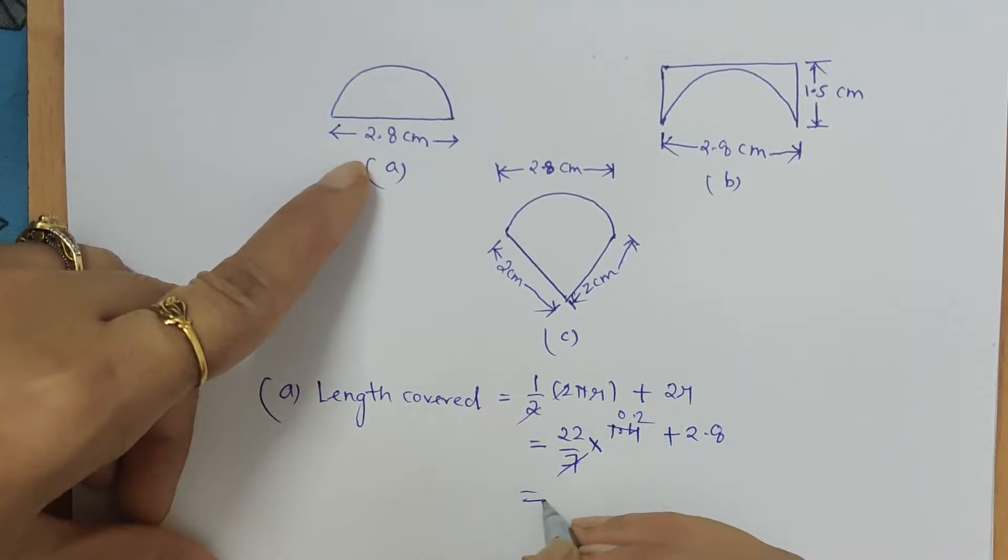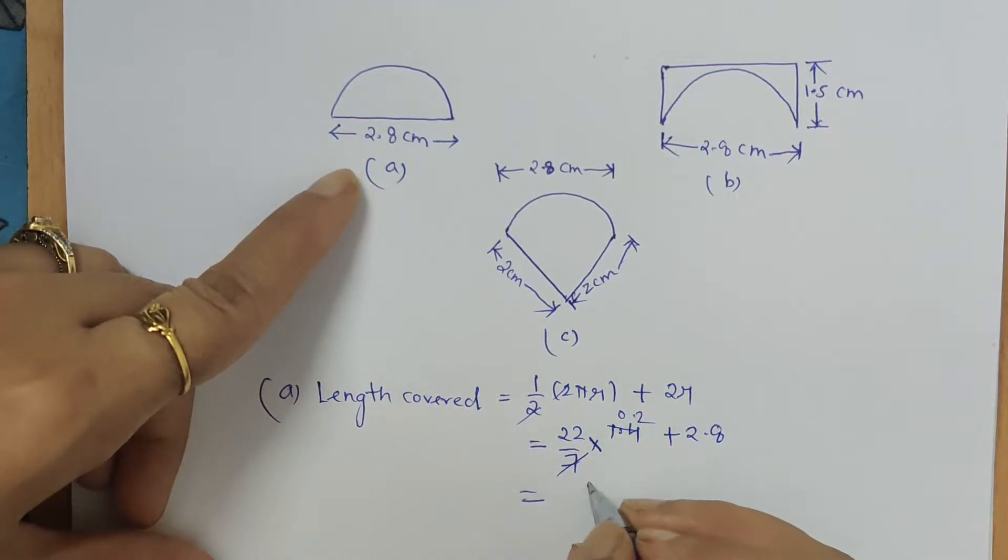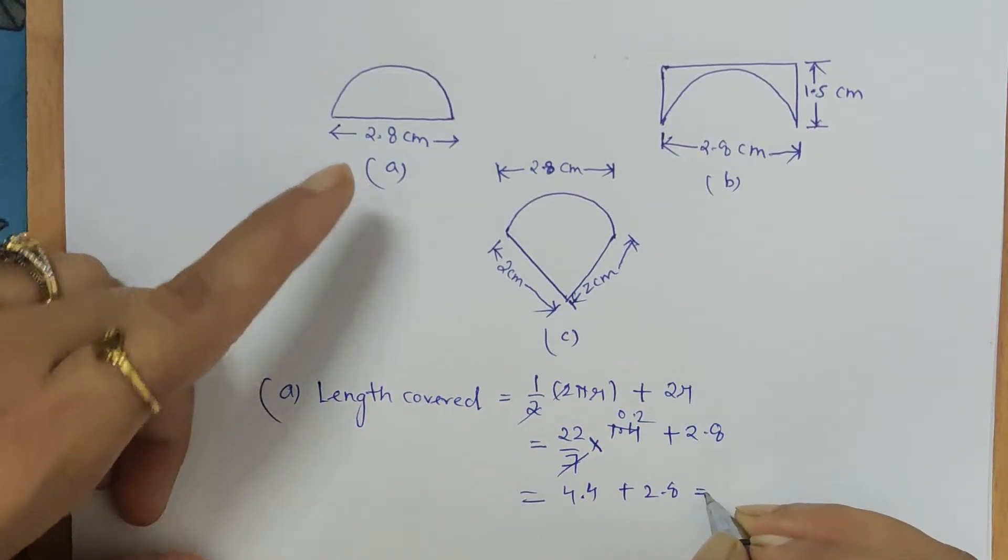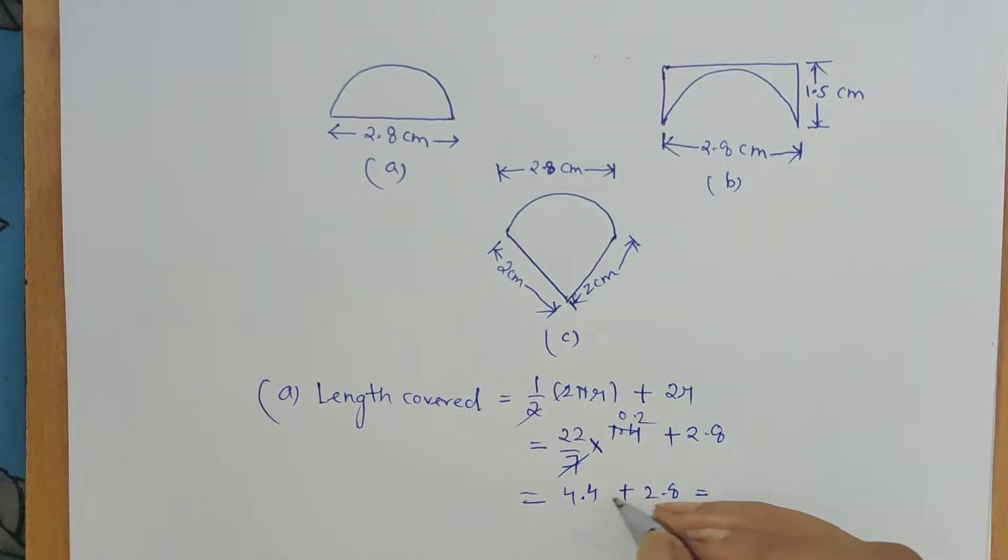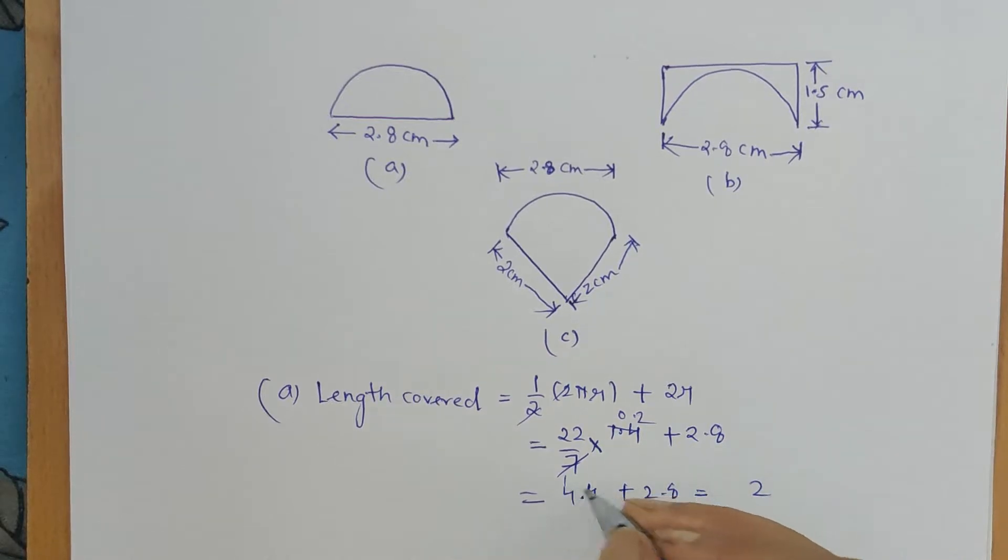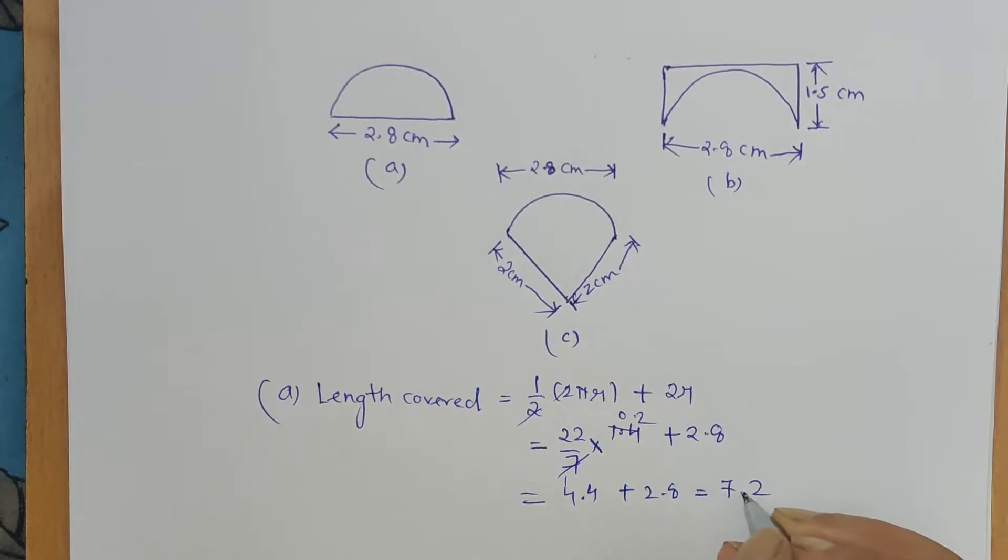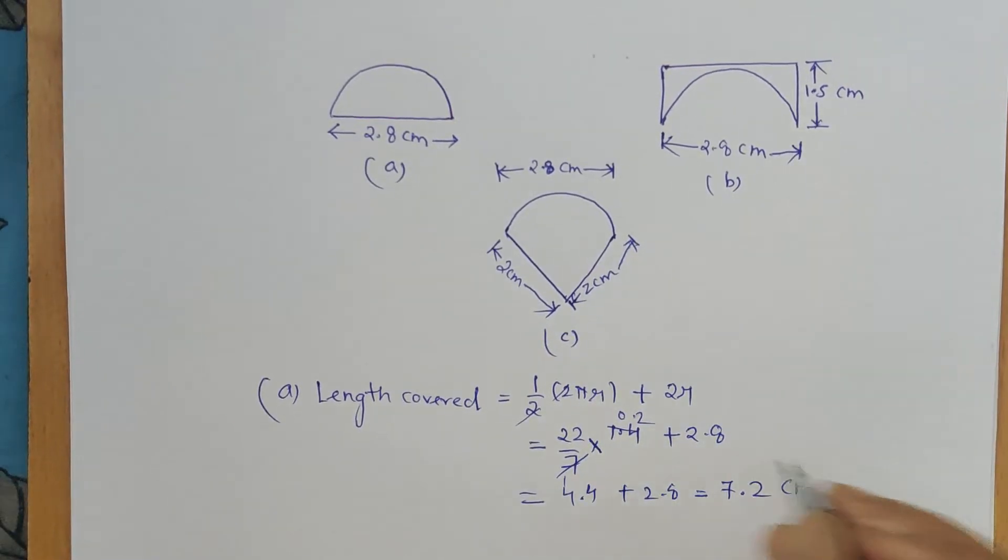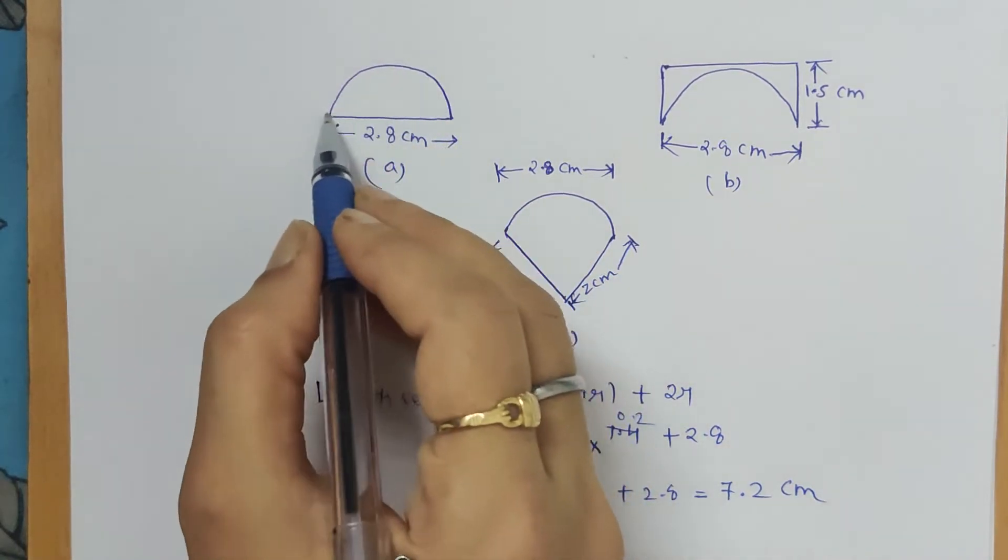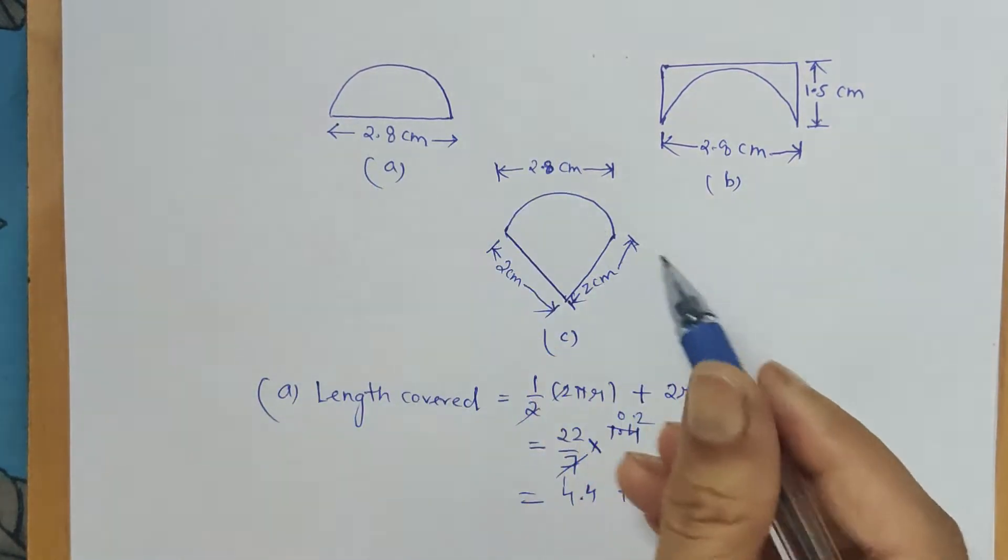So here we get 0.2 times 22 is 4.4 plus 2.8 gives us... 8 plus 4 is 12, so 7.2 centimeters. We get the length covered by the ant in the first food piece.